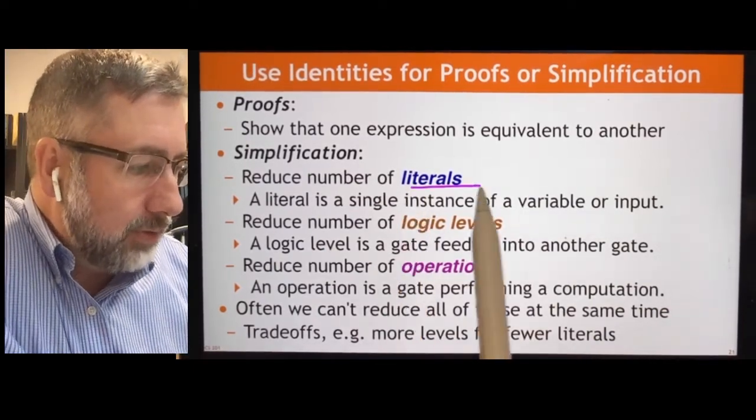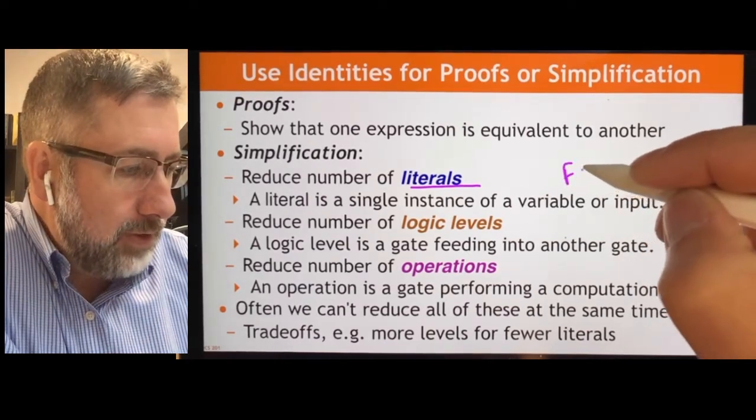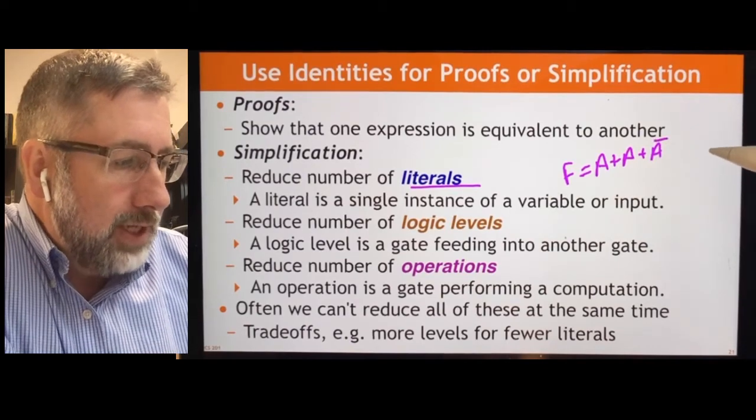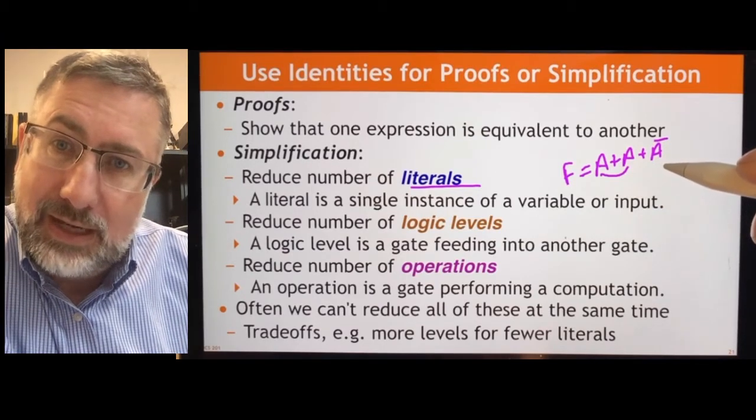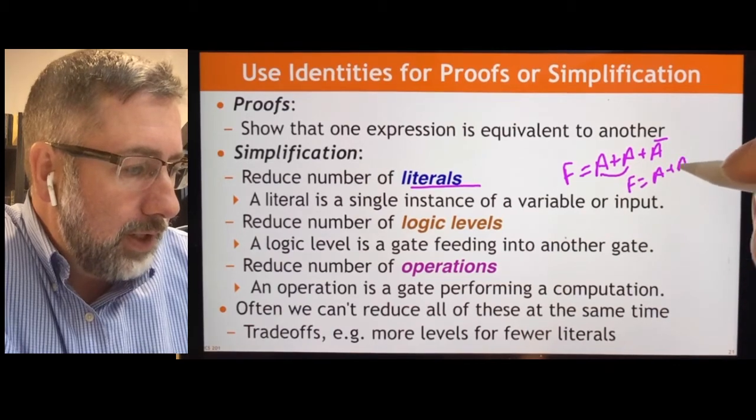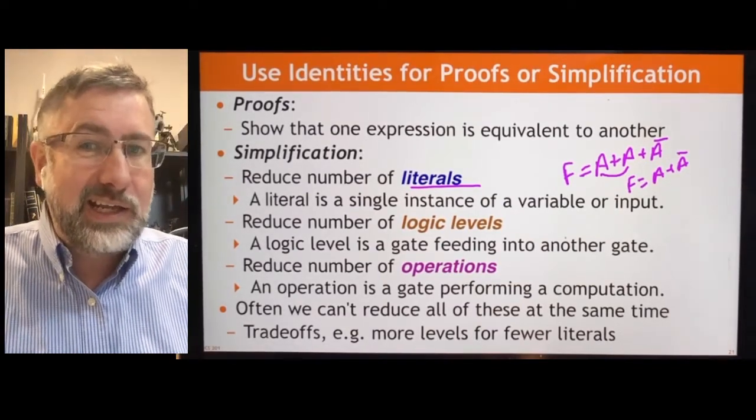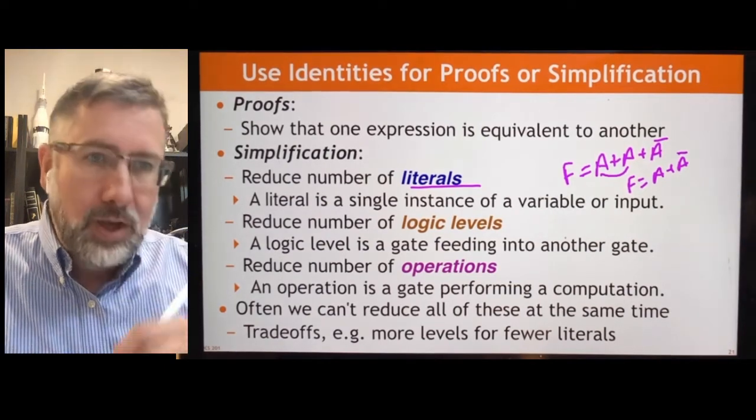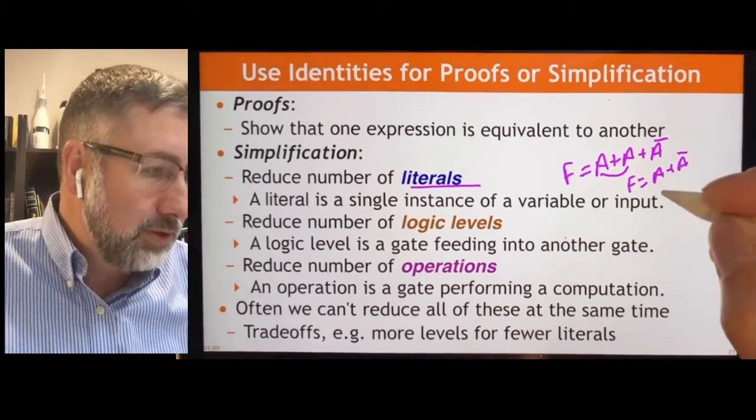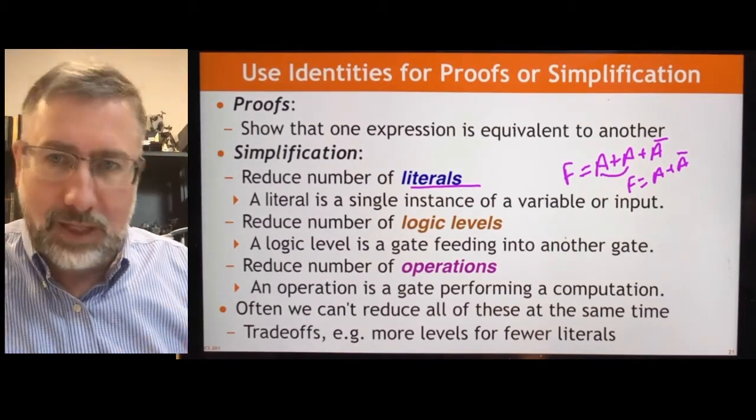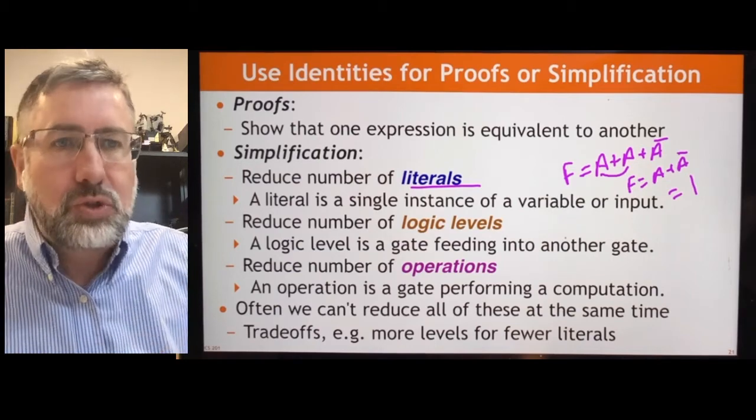A literal, by the way, I think this is where we define it. A literal is just a single instance of a variable or an input. So if we have, for example, f equals a or a or a prime, that has three literals, but we can simplify it because we know already that a or a is the same as a. That's the idempotent rule. So this is f equals a or a prime. So that already has one fewer literal. So it's simpler. And we can simplify this even further. We can say a or a prime is one. There's only one situation where, or I guess the other way of saying that is in all situations, either a or a prime will be true. If a is zero, a prime will be one. And that's true. If a is one, a or a prime is true. So this is just equal to one. It's always true, which means we have no literals. So we've reduced the number of literals using our simplification rules.